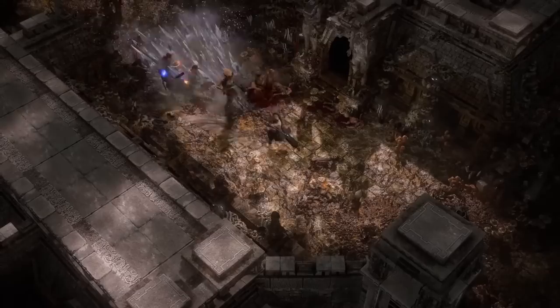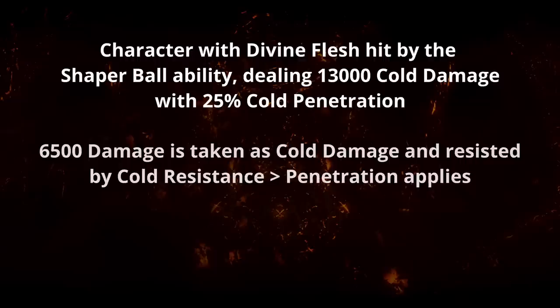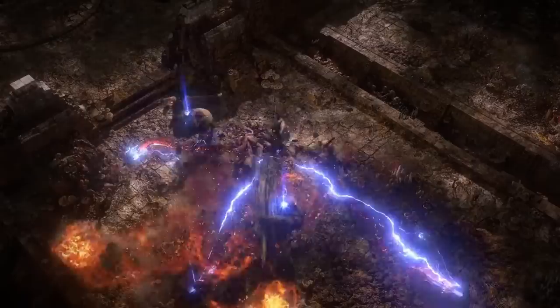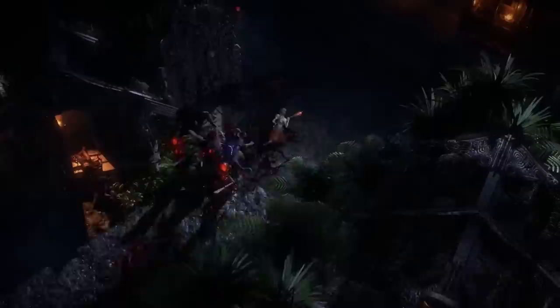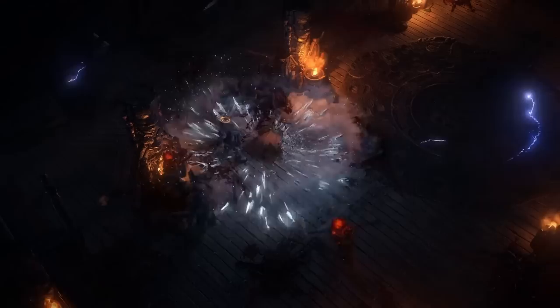The damage can also have type-specific penetration. Shifting damage to be taken as another type lets you avoid damage-type-specific penetration on that portion. For example, if you're hit by a Shaper beam dealing around 13,000 damage with 25% cold penetration, 6,500 damage is resisted by your cold resistance with penetration applied, but the other 6,500 is resisted by your chaos resistance and cold penetration cannot apply. However, be aware of situations where monsters have global penetration — for example in Expedition, exploding a remnant that allows monsters to penetrate 15% of your chaos resistance, which would apply to half the elemental damage they deal to you.